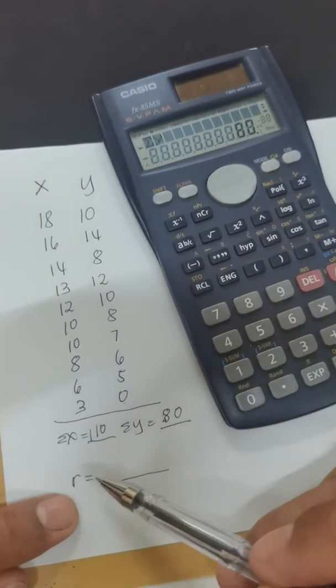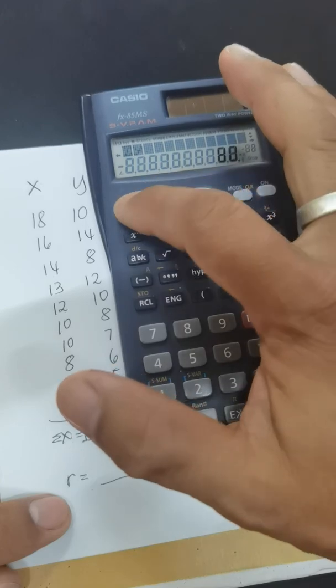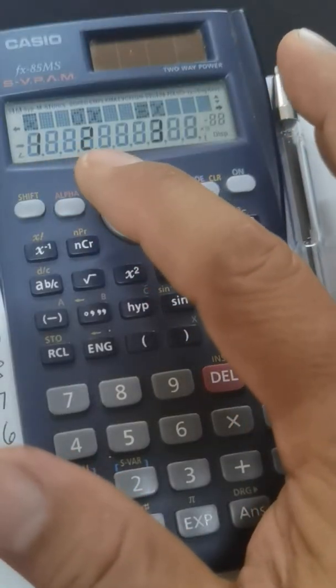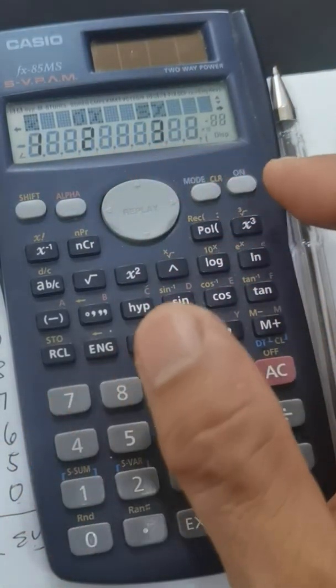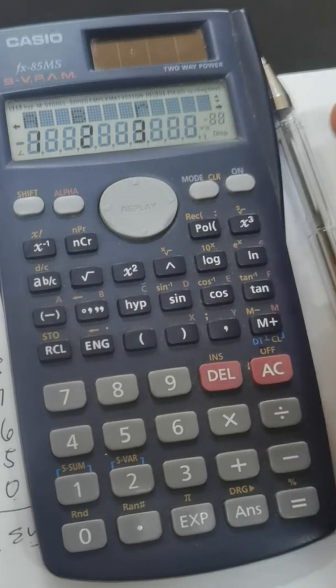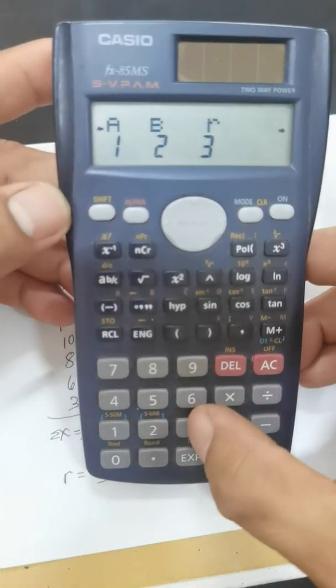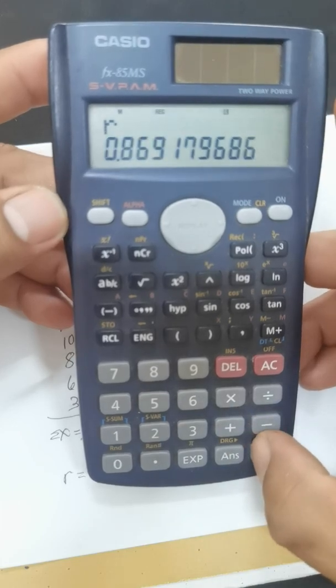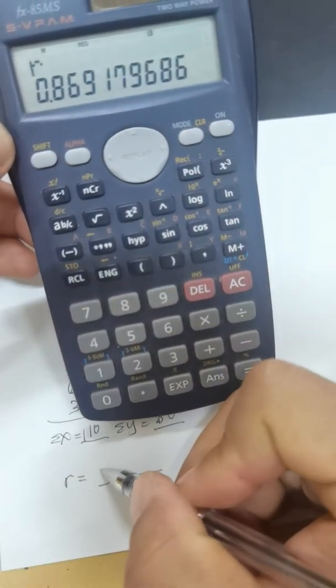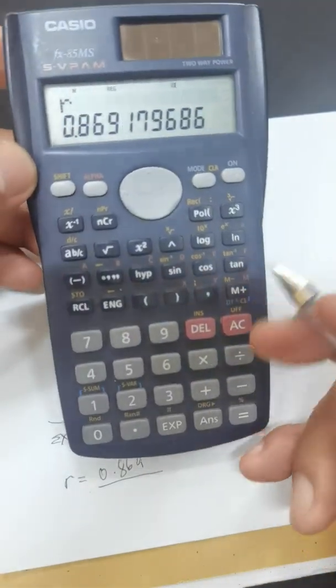Then we're going to find the value of R. We're going to press shift again. We have here some options. Here we have the value of R, and we're going to press number 3, then equals. So the value of R is 0.869. Then we're going to check this using a computer later on.